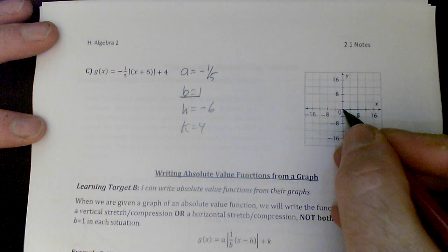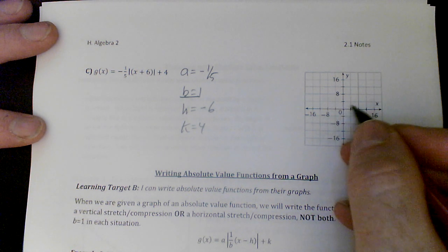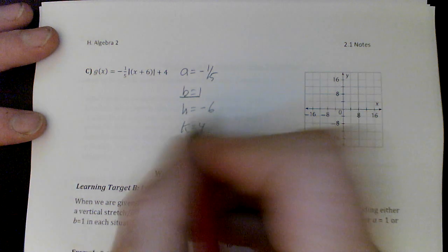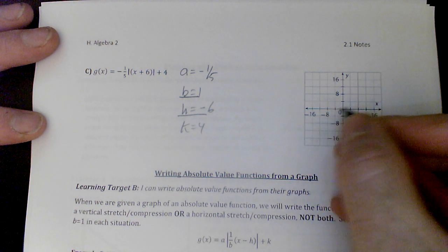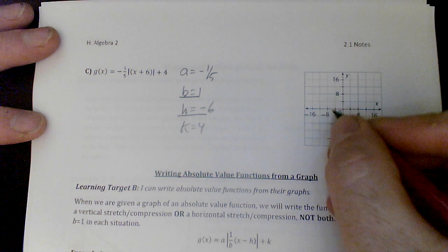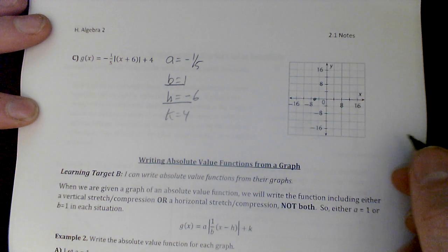I'm going to do b first. b does nothing. All right. So I stay right here. No stretches. I'm not even going to draw a stretch because it doesn't exist right now. h says, hey, you know what you're going to do? You're going to move left 6. Well, 6 is, wow, a scale of 4. 6 is right here. I don't really like these scales, but there it is.